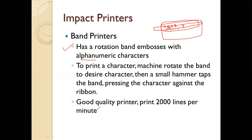Now it comes to the speed. The Dot Matrix printer prints at 500 characters per second. The Line Printer prints at 3,000 lines per minute. The Band Printer's speed is 2,000 lines per minute. This is an important MCQ point: Band Printer speed is 2,000 lines per minute.